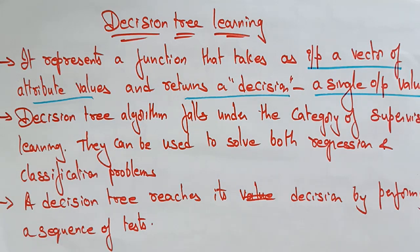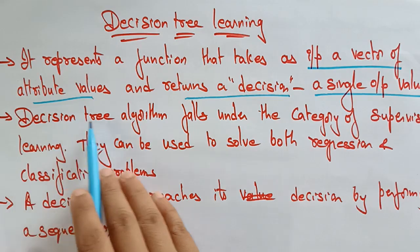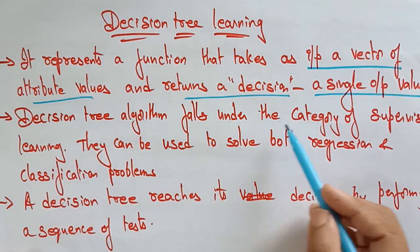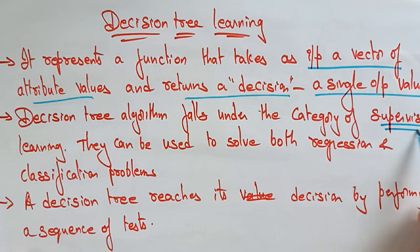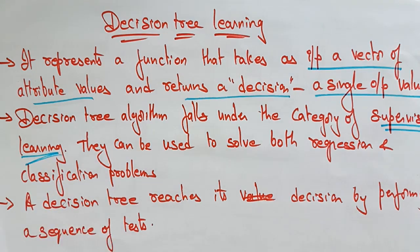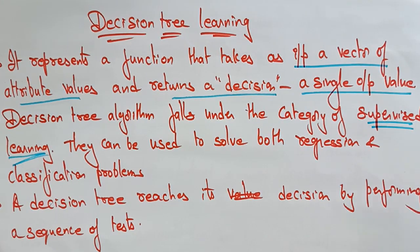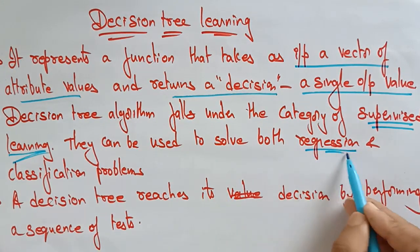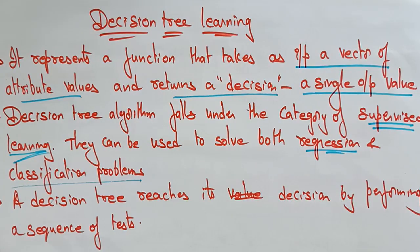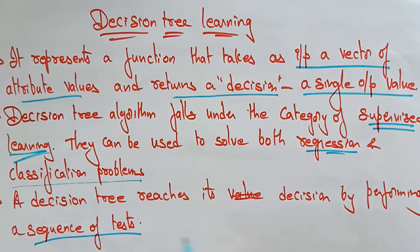The decision tree algorithm falls under the category of supervised learning, just like inductive learning also uses supervised learning. The decision tree also comes under supervised learning. They can be used to solve both regression and classification problems.